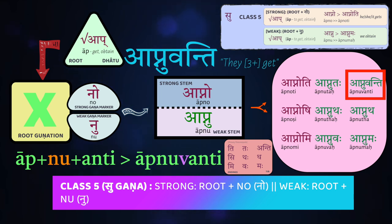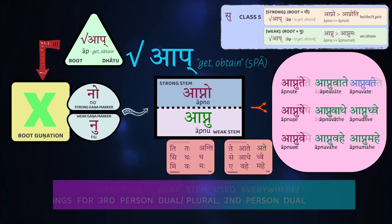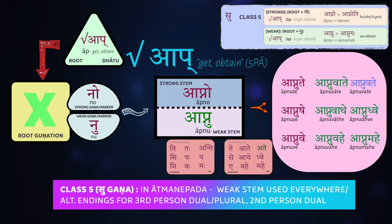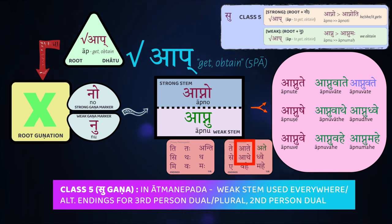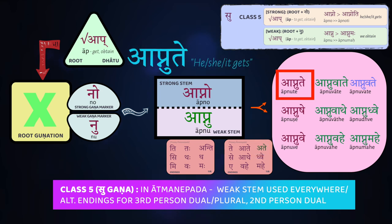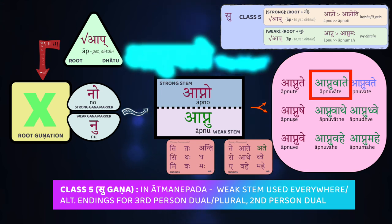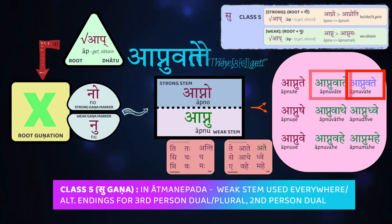So we have āp-nu-vanti. We should note that āp also has not just parasmaipada endings but ātmanepada — the faux ātmanepada conjugation — and that will only use the weak stem āp-nu. We'll have our alternate ātmanepada endings, where we have long ā instead of a in our duals in the third and second person, and we're also going to have āte instead of ante in the plural. So third person singular is āp-no-te (he/she/it gets), and the dual is āp-no-vāte (the two of them get), and the plural is āp-no-vate (they get or obtain).